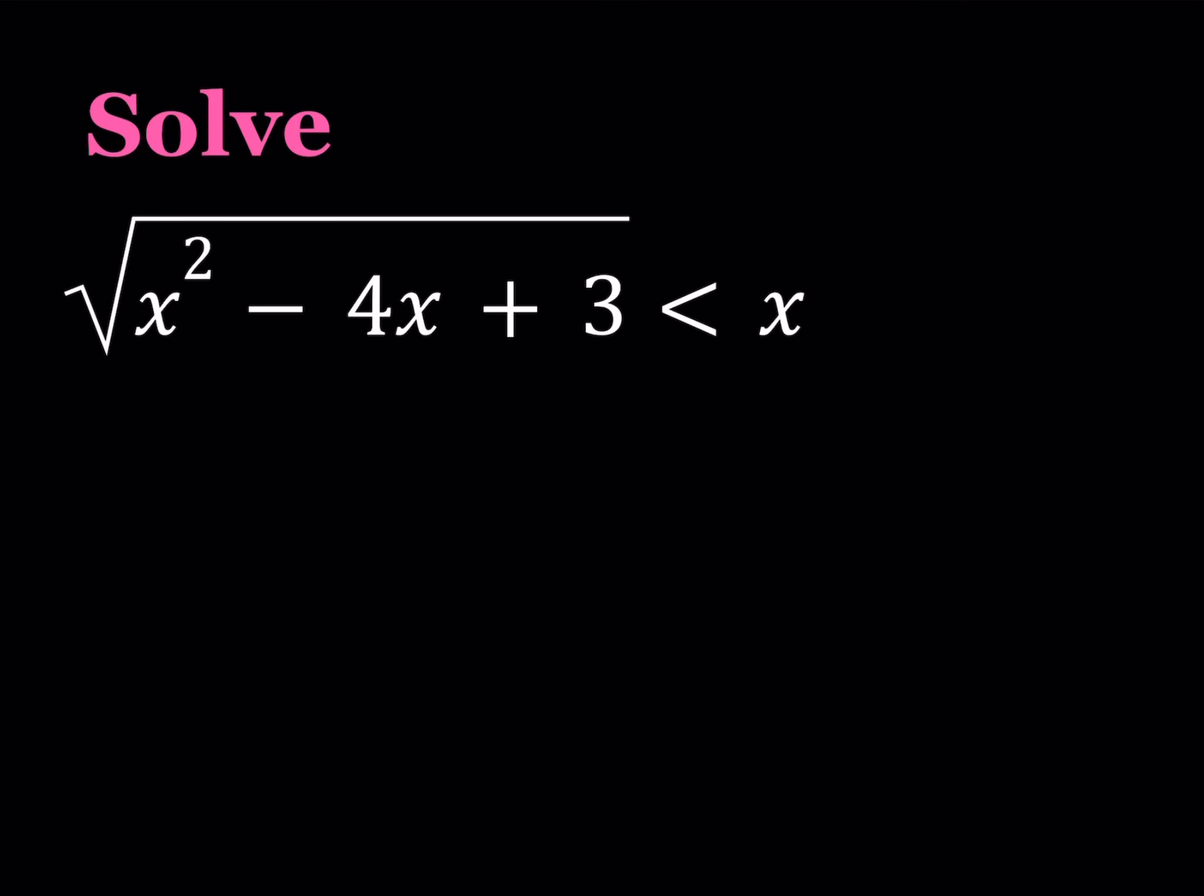So this expression is factorable. Let's go ahead and factor under the radical. Let's write it as x minus 1 times x minus 3. So I want this expression to be less than x. So how am I going to achieve that?